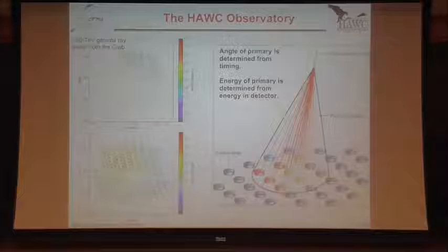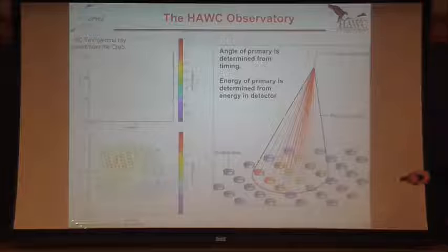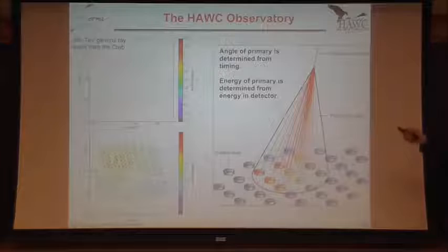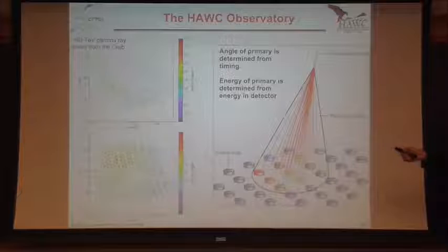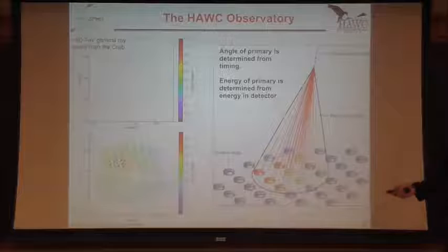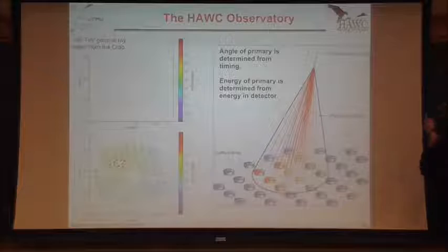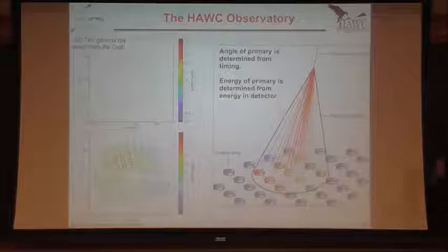This is a simulation of a 60 TeV event, slowed way down so you can see how the timing information is used in event reconstruction. You can see the air shower front sweeping across the array. You calculate how much charge was deposited in each photomultiplier tube and use that to reconstruct the energy. For each gamma-ray event you determine where it came from and what its energy is — very similar to what we do with Fermi — and you keep a record of that to make a big sky map.